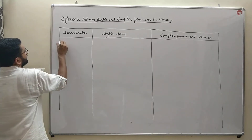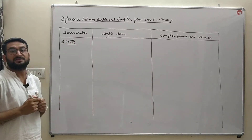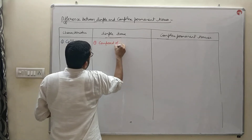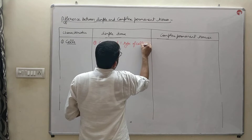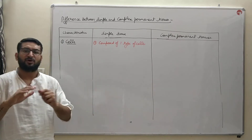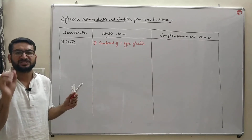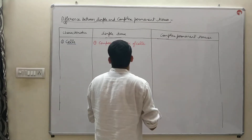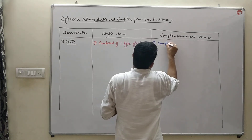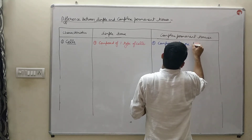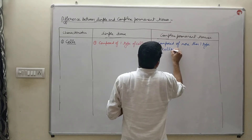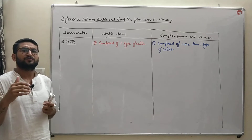The first characteristic on which we discuss the difference is cells. Simple permanent tissue is composed of one type of cells — all cells in that particular tissue are of a single type. For example, parenchyma has one kind of cell, colenchyma has one kind of cell, and chlorenchyma also has a single type of cell. Whereas complex permanent tissue, as their name indicates, is composed of more than one type or form of cells, as we know xylem and phloem are composed of four different types of components.